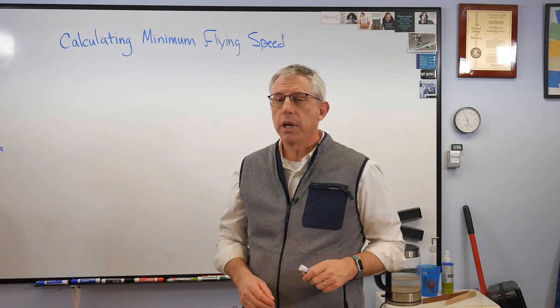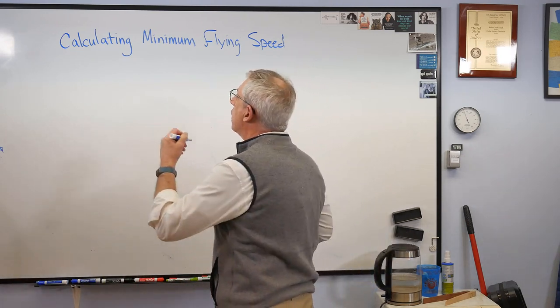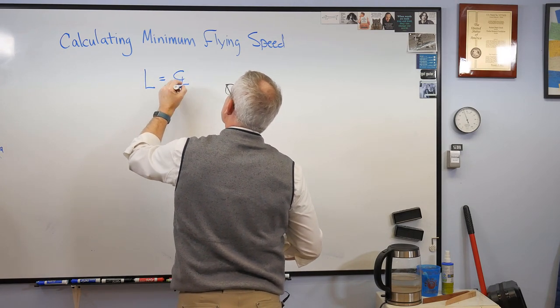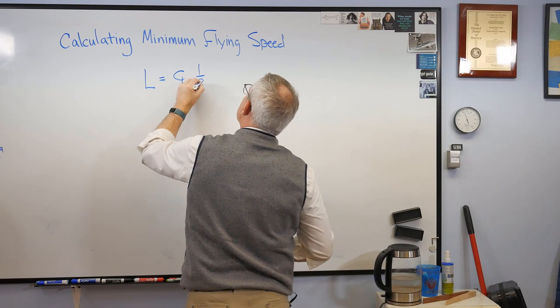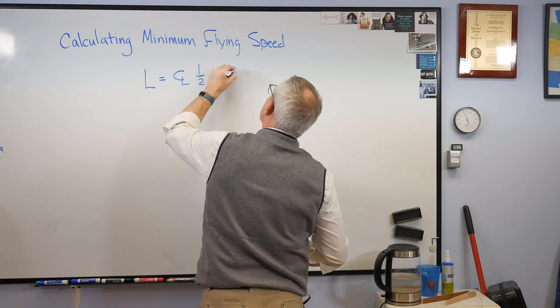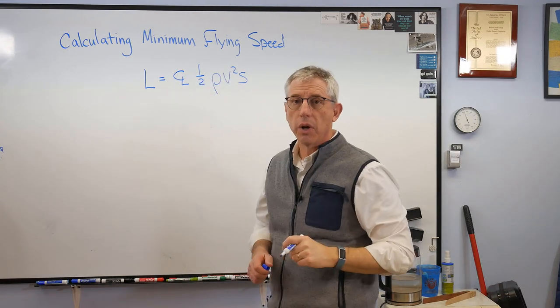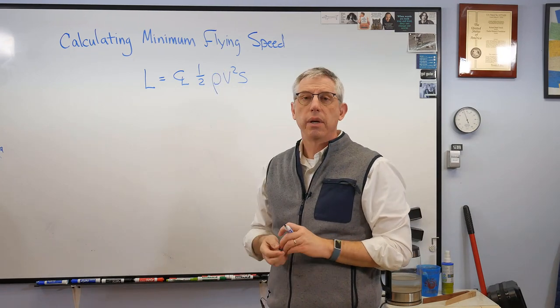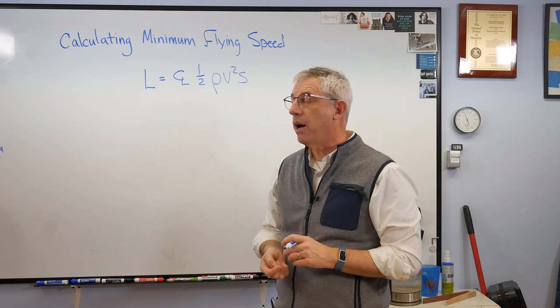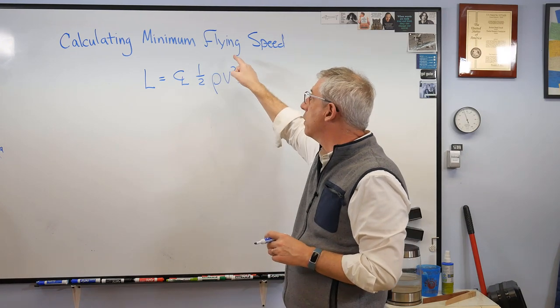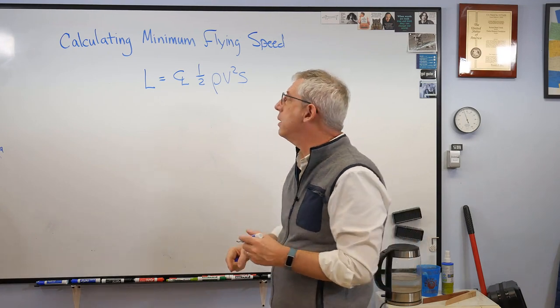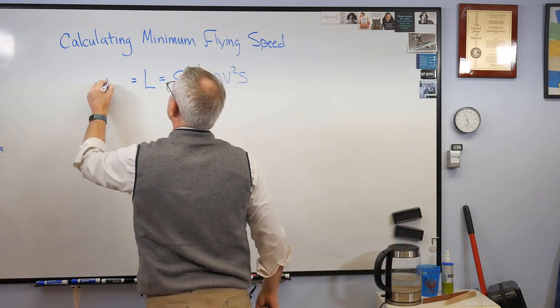So first thing we need to know is a governing equation. The governing equation is that the lift produced by a plane is the lift coefficient CL times one-half rho v squared S. Now let's make sure we know what all these things mean. Okay, lift, that's the force up, and that has to counteract the weight down. So when you're looking at the minimum flying speed, the lift has to equal the weight.